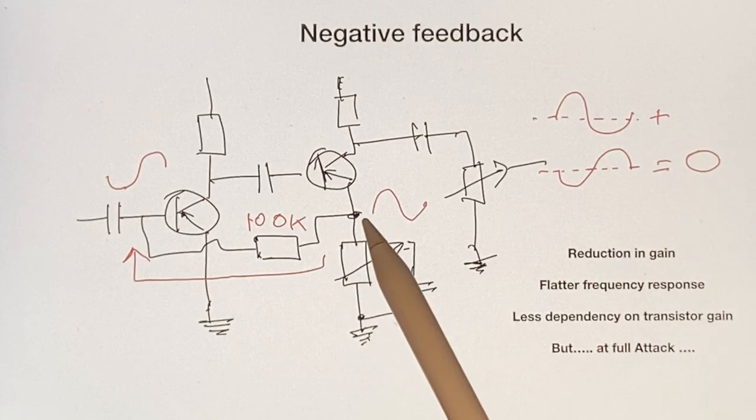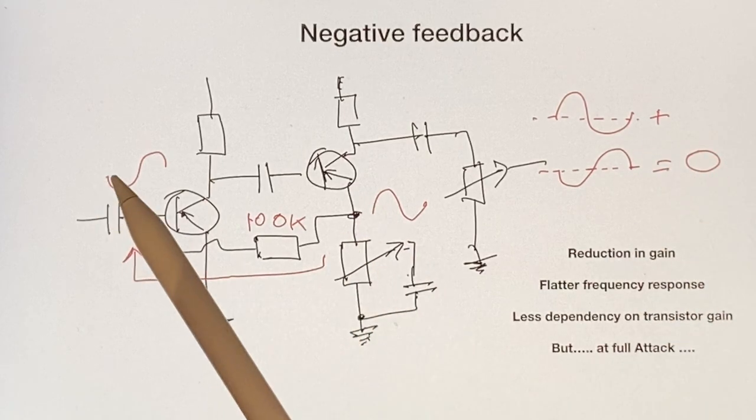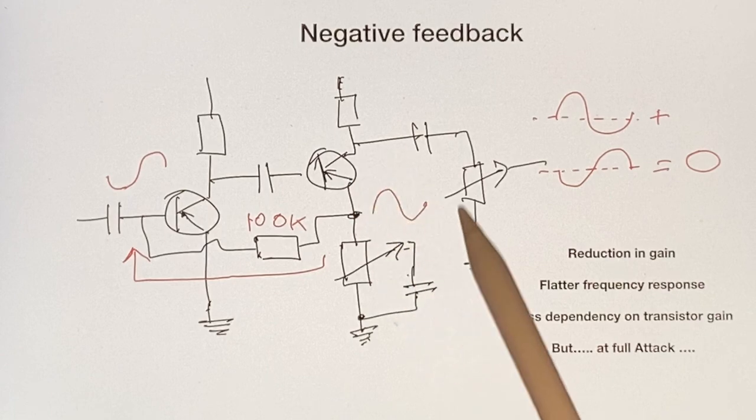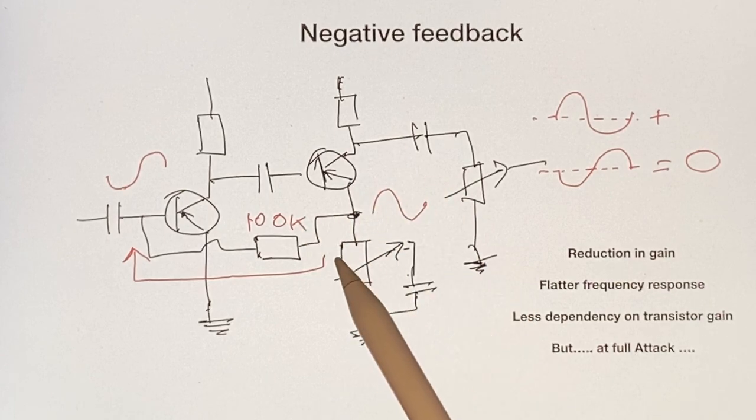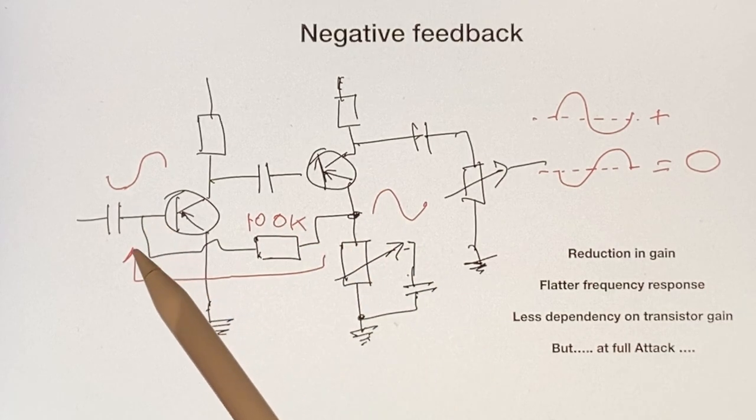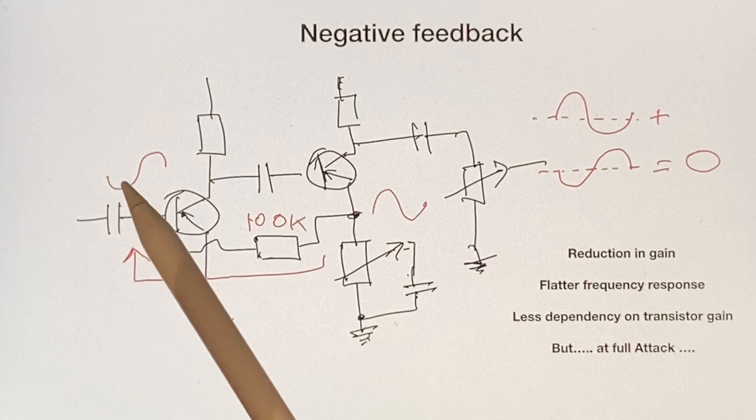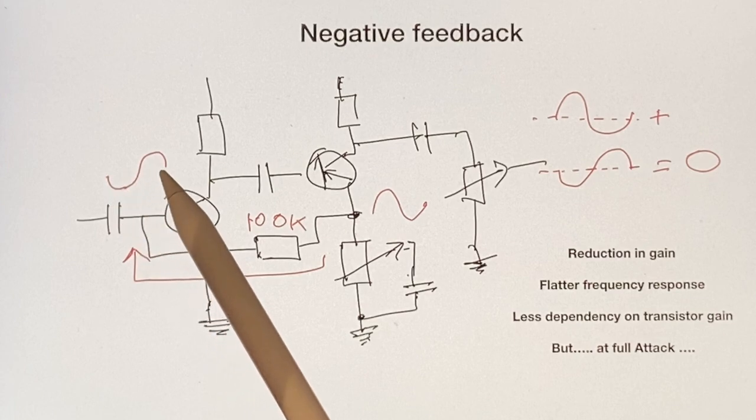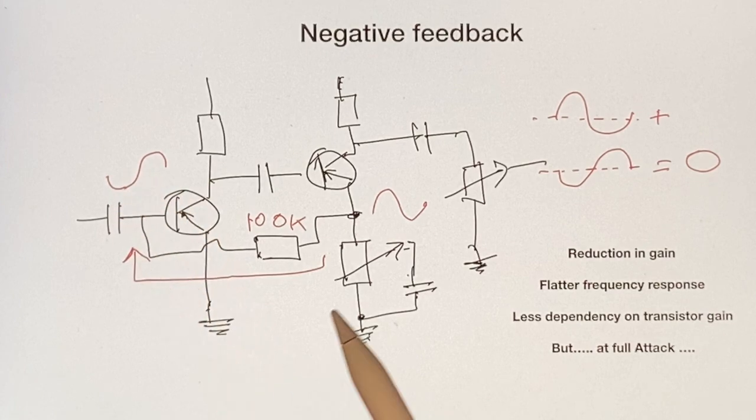What we're doing is taking this input signal which is small. It's amplified twice so it's actually much larger, but then we're taking a small sample of this with the 100k, feeding it back to the input. So it's quite a small signal that's fed back to the input here in anti-phase, and it cancels out a portion of this signal. This negative feedback is used in many circuits.